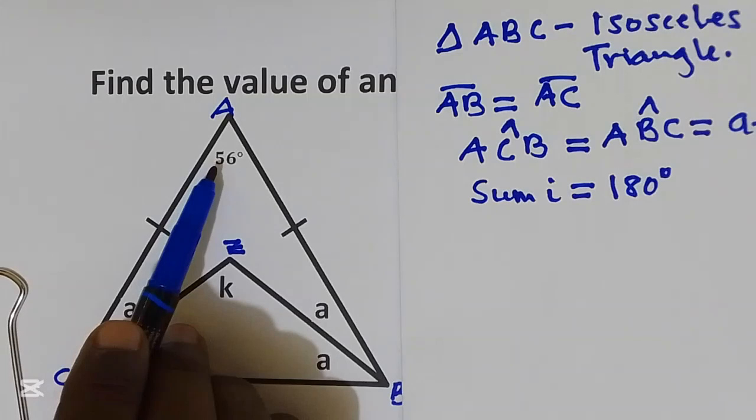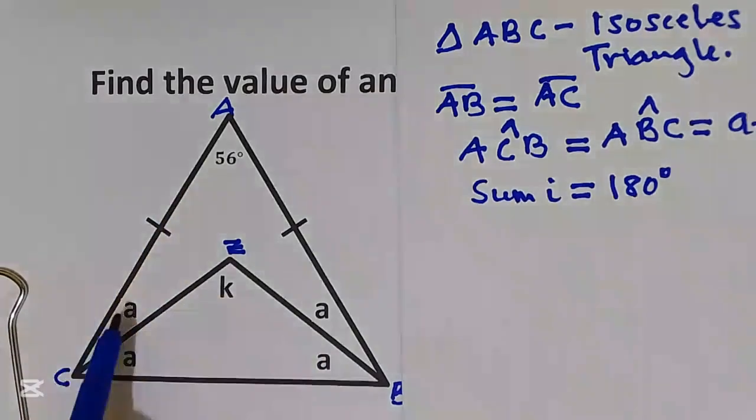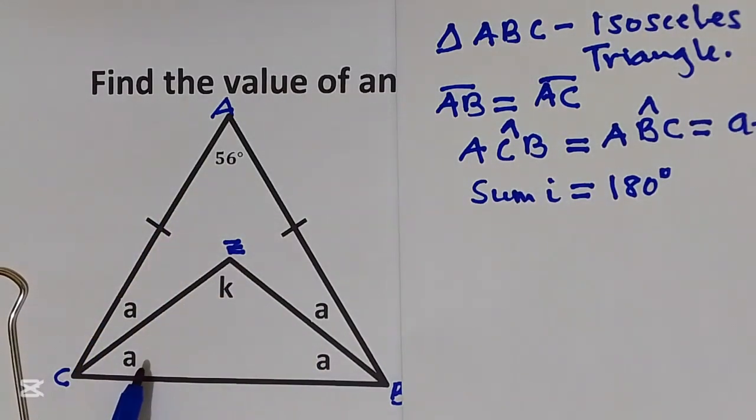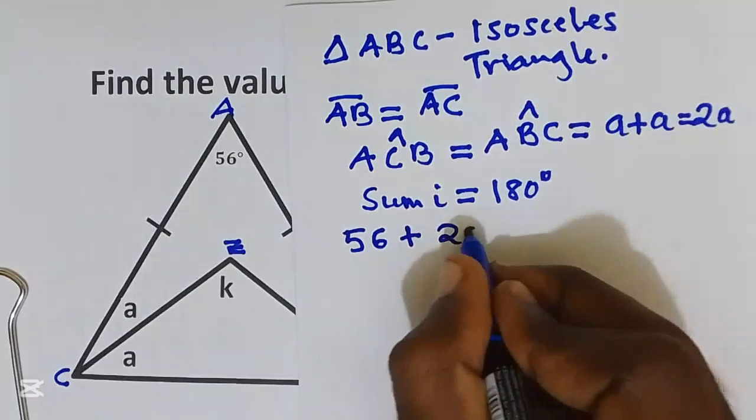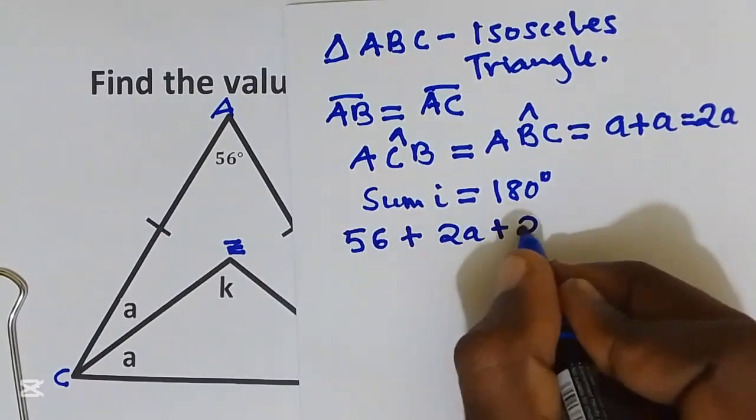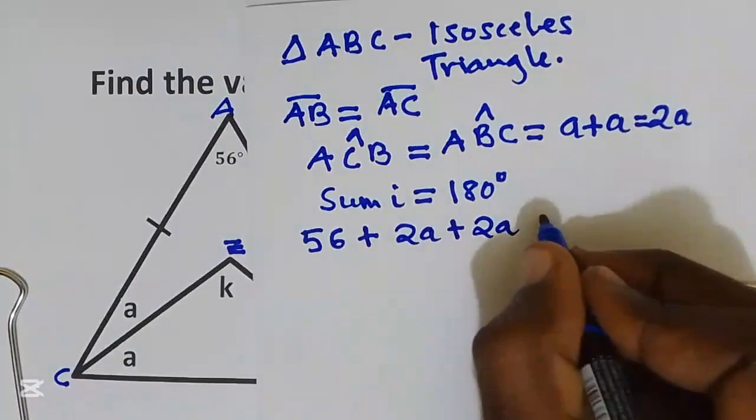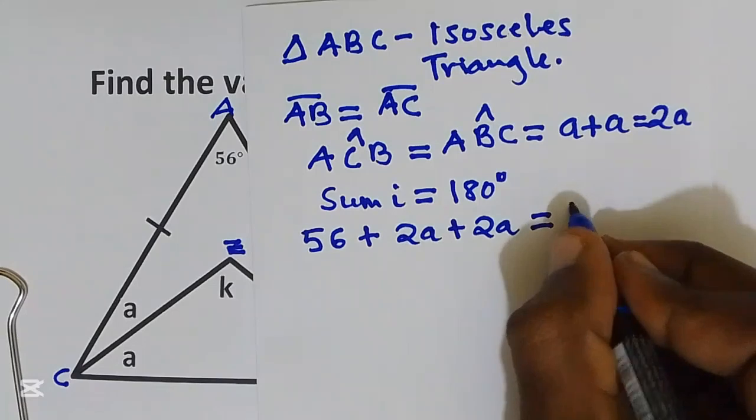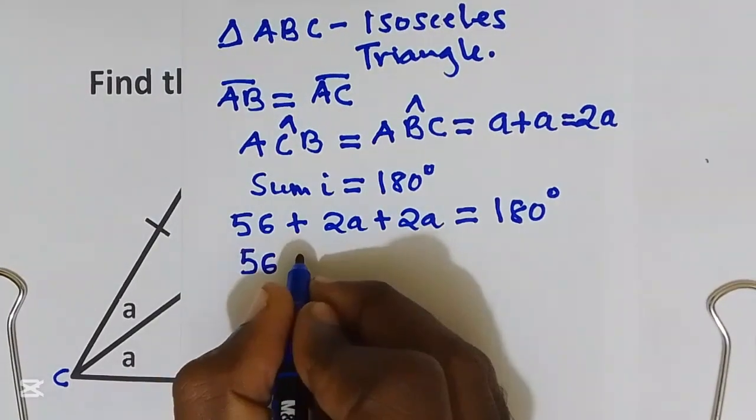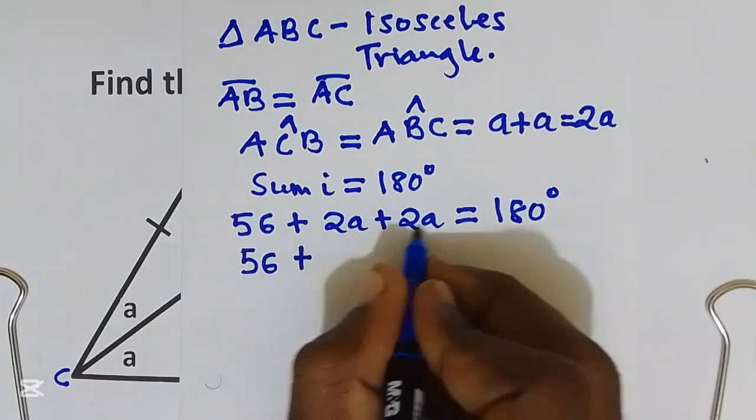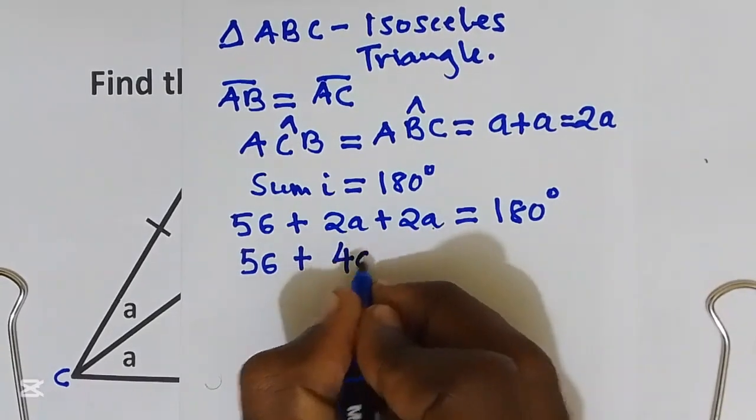That means 56 plus 2a plus 2a gives us 180 degrees. 56 plus 4a equals 180 degrees.